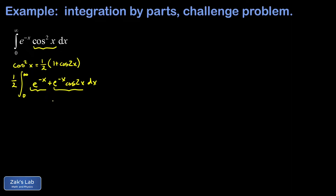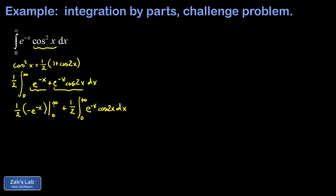I'll split off the e to the negative x part and integrate it — the antiderivative is just negative e to the negative x. So I get one-half times negative e to the negative x, evaluated from zero to infinity. Subbing in infinity gives e to the negative infinity, which equals one over e to the infinity, which is zero. Subbing in the lower limit gives e to the zero, which is one, and I'm subtracting that lower limit, so the minus signs cancel and I get one-half. That leaves one-half plus one-half times the integral from zero to infinity of e to the negative x cosine 2x dx.